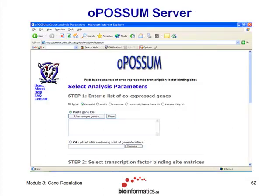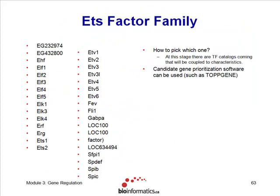So what can you do in those cases? One thing you can do is download the list of all members of that family — there's a tool called TF-CAD and another called DBD which have lists of all members of these families. You can then take those lists and go to a tool like Topgene, which prioritizes genes based on the literature to see which members of the family have a connection to the biological term you're interested in. It's not a perfectly clean solution, but it's an approach.